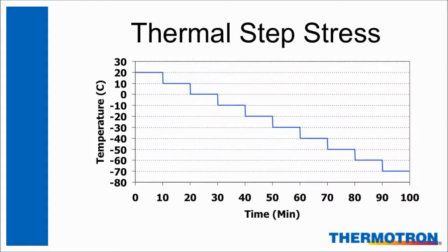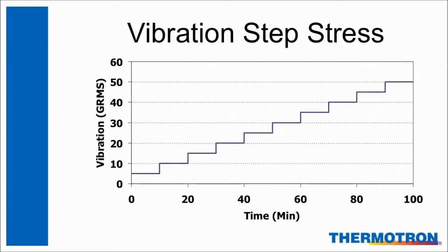Thermal step stressing is one way to perform HALT. A typical test begins at ambient temperature and will increase or decrease in 10 degrees C increments every 10 minutes. This is continued until there is a failure or the temperature reaches the fundamental limits of the technology used in the product. This could be the temperature at which a crystal stops working when getting cold, or the temperature that solder reflows when going hot. Basic HALT procedures also use step stressing for increasing vibration levels. The test starts at a low stress level, remains at each level for about 10 minutes, and then includes running the product's diagnostics. Stress levels are increased until a failure occurs. When a failure occurs during any of the temperature or vibration step stresses, the operator should stop the test, identify where the failure occurred, if possible temporarily fix the failure, and then continue increasing the stress.